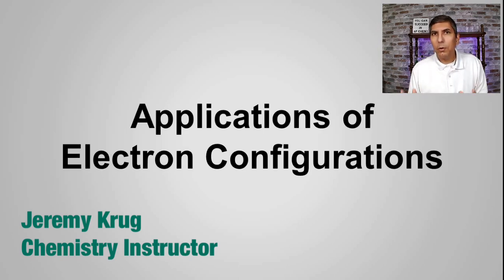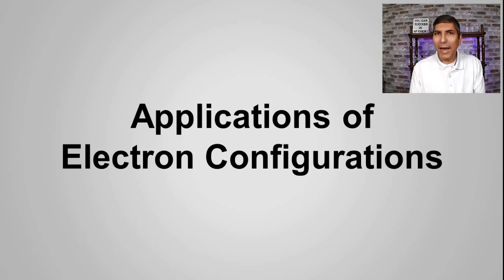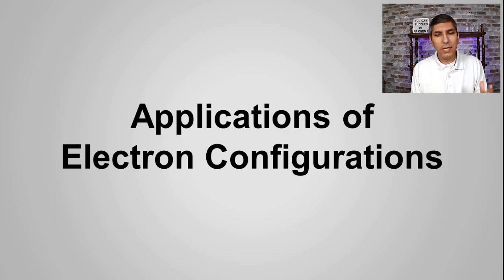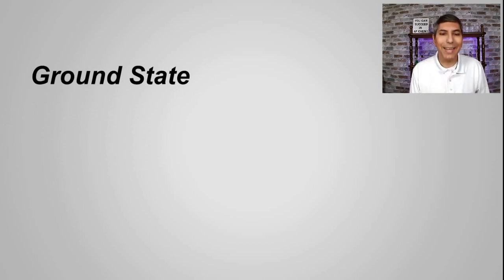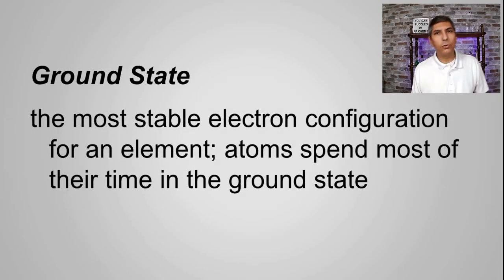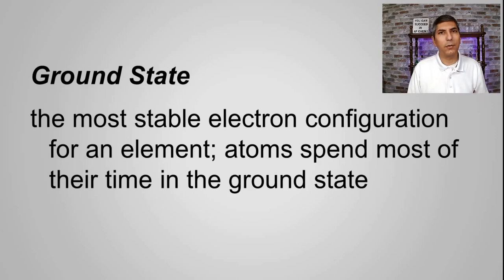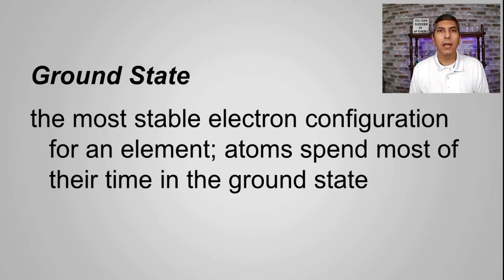In the last several videos, we've spent the bulk of our time practicing how to write electron configurations. As it turns out, there's a name for the specific type of electron configurations that we've been writing, and these are called ground state electron configurations. Ground state basically just refers to the most stable electron configuration for an element. This is basically where atoms are spending most of their time — almost like the electron's home.